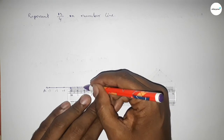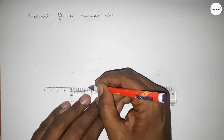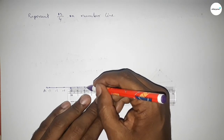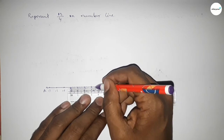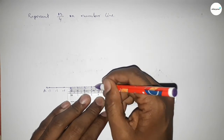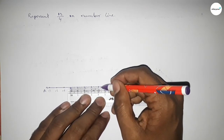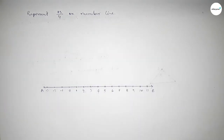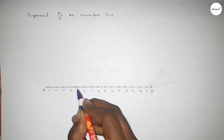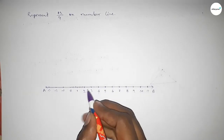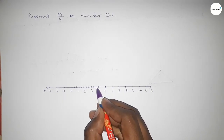Dividing into four equal parts. Again similarly taking between two to three, first taking half, then dividing the distance into four equal parts. By this way we can divide the distance between any two numbers into four equal parts using a scale. Now marking the numbers with deep color to understand perfectly.